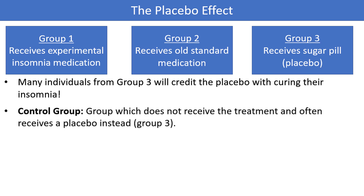The control group is the group that does not receive any treatment, and oftentimes receives a placebo instead. In our case, group 3 is the control group, but sometimes the control group might not receive a placebo for various reasons. For example, if your experiment relates to plant growth and fertilizer, it wouldn't make much sense to give some of the plants a fake fertilizer. Instead, a standard fertilizer or perhaps no fertilizer at all might be considered the control group, which would be compared to a new competing fertilizer.